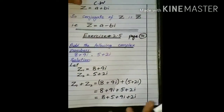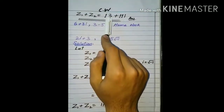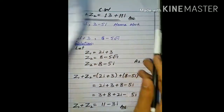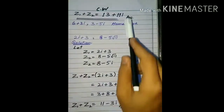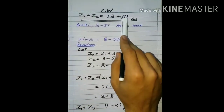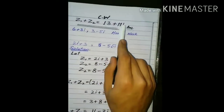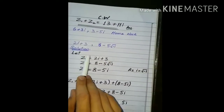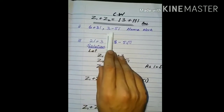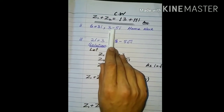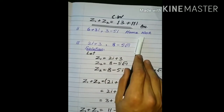8 اور 5 کو ہم add کر لیتے ہیں تو ہمارے پاس 13 آ گیا ہے اور 9 plus 2 کو ہم add کر دیتے ہیں تو ہمارے پاس 11 iota آ گیا ہے۔ i کو ہم iota read کرتے ہیں۔ Next ہمارے پاس جو question ہے: 6 plus 3 iota اور 3 minus 5 iota — یہ آپ لوگوں کا ہوم ورک ہے، آپ لوگوں نے خود کرنا ہے۔